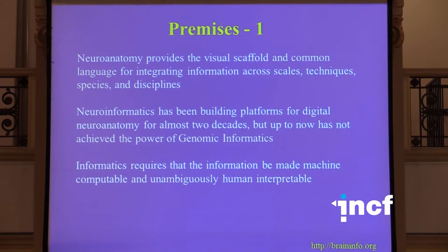Neuroinformatics has been building platforms for digital neuroanatomy for almost two decades. But up to now, it has not achieved the power of genomic informatics. If you're a geneticist and you've established the nucleotide sequence of a new gene, you can go to any of a number of gene banks, feed in that sequence, and get back a list of all species that have that exact sequence. We should be able to do that in neuroanatomy, but at the present time, we're not.